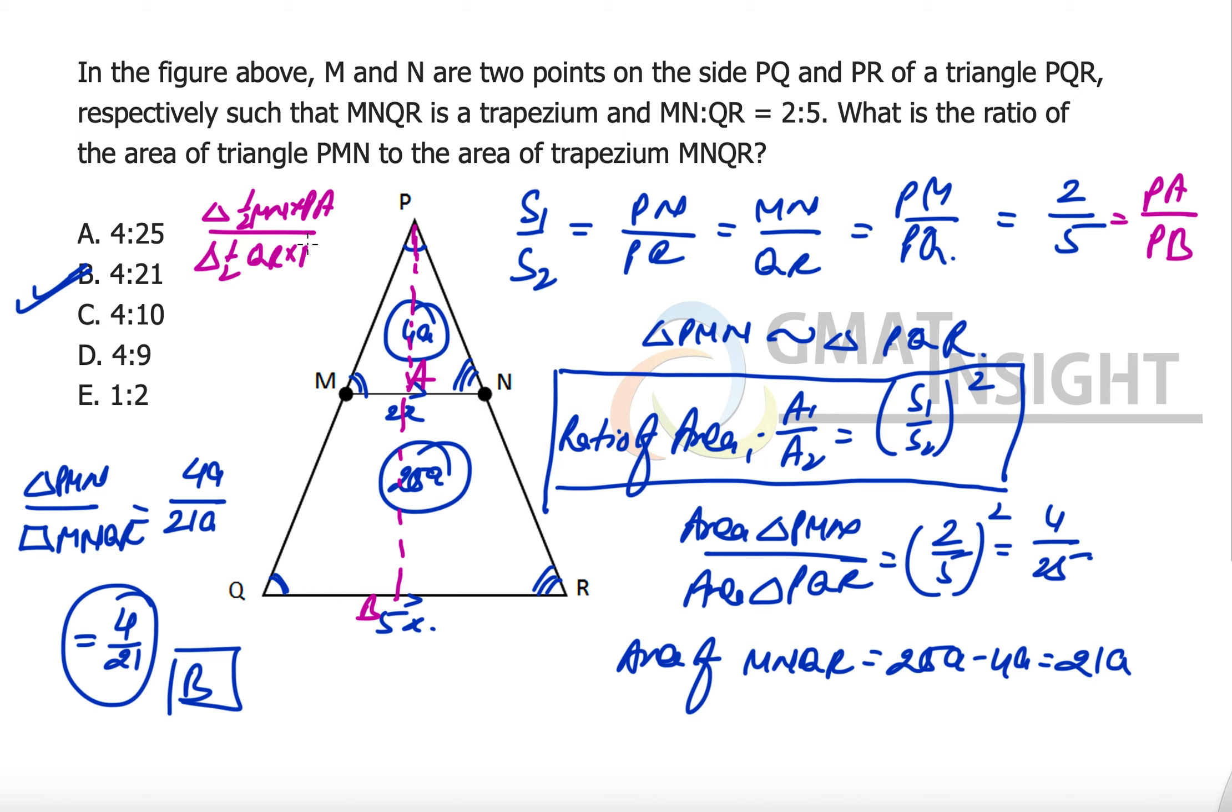But we need to understand that PA upon PB is same as MN over QR and now that we know that we can quickly say that the ratio of areas is the ratio of corresponding sides and then square it because the same ratio has been used here twice.